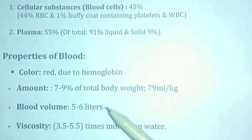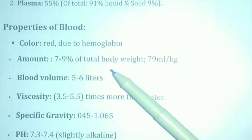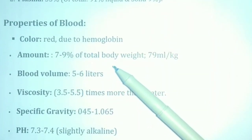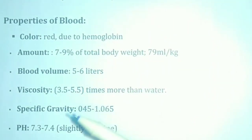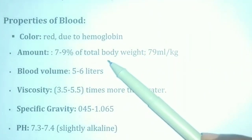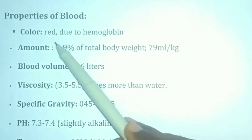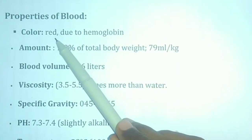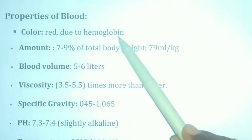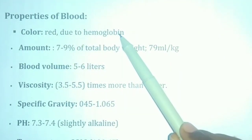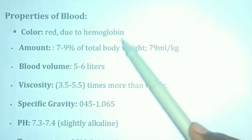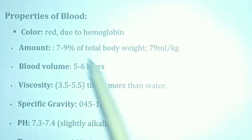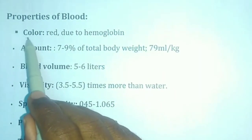The properties of the blood. The blood has a color. It is red due to Hemoglobin — the hemoglobin gives blood its red color.